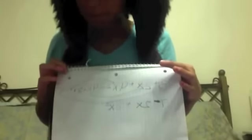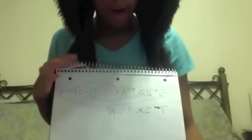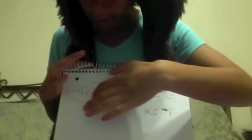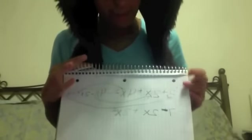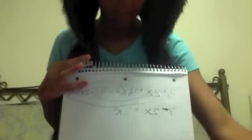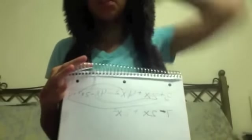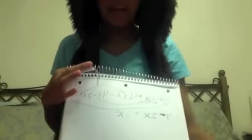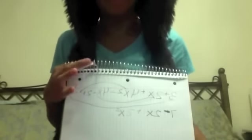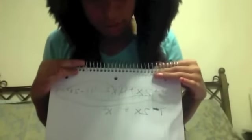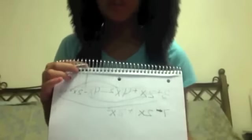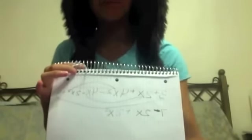Here is the solution: 3 plus 2x plus 4x to the 2nd minus 4x minus 2x to the 2nd plus 4. There are a lot of like terms, so let's combine them. First, 3 plus 4 equals 7. Then 2x and negative 4x — the answer is negative 2x, since the 4 is higher. The last like term is 4x to the 2nd minus 2x to the 2nd, which equals positive 2x to the 2nd — you leave the exponent the same. So your final equation is 7 minus 2x plus 2x to the 2nd. You cannot reduce that any further because there are no like terms, and that's your final answer.